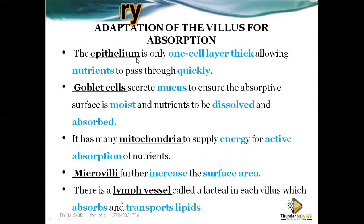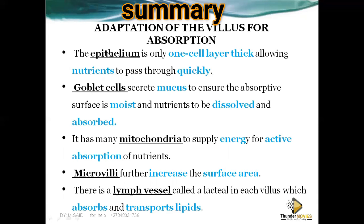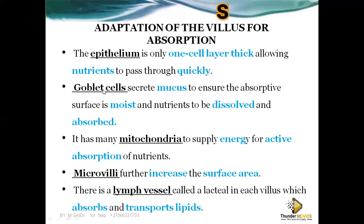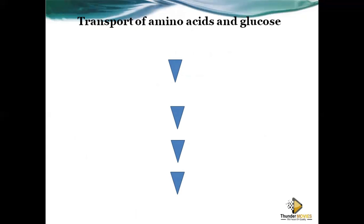To recap the adaptations of the villus: the epithelium is one cell thick to allow nutrients to move quickly; goblet cells secrete mucus to keep the surface moist and help dissolve nutrients; mitochondria produce energy for active absorption; microvilli increase the surface area; and the lacteal duct absorbs and transports lipids.